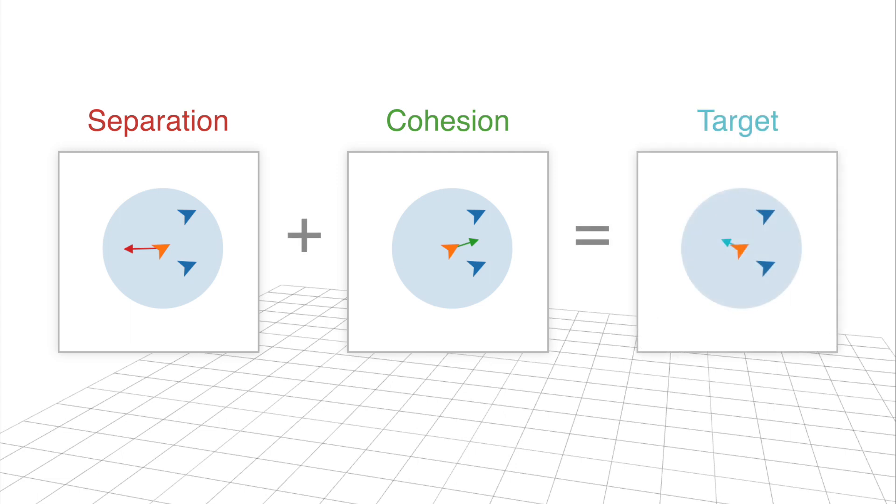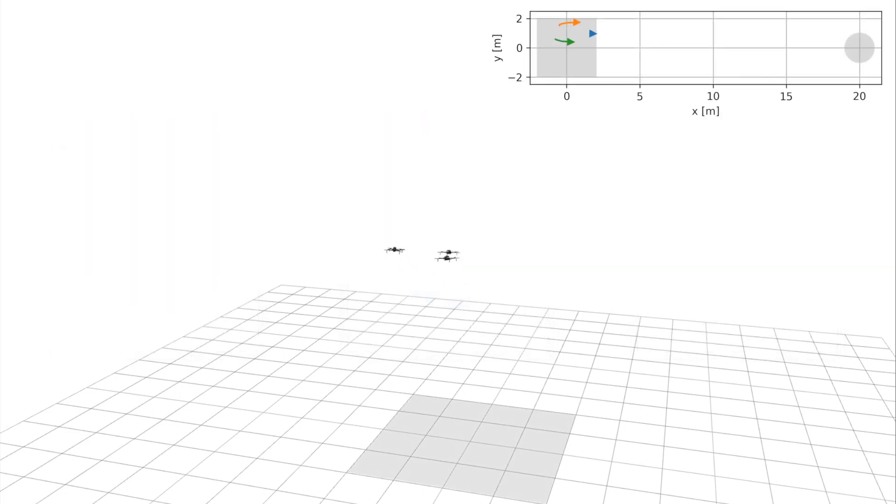Separation and cohesion together provide the expert command for our imitation learning algorithm. In simulation, the drones assume random positions inside a cubic takeoff zone and start migrating towards a common waypoint on the far side of the arena.